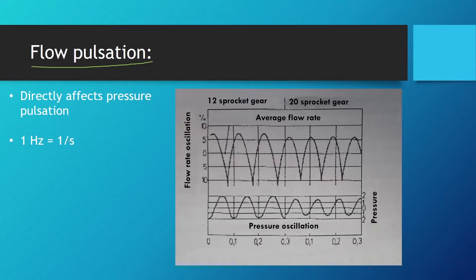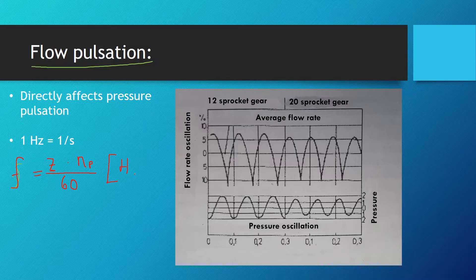How do we calculate flow pulsation? First, let's calculate the frequency of the pulsations. The frequency f equals z, the number of teeth, times the speed in rotations per minute, divided by 60. This gives frequency in hertz. One hertz means it happens once per second; 60 hertz means 60 times per second. One hertz is essentially one divided by second, or second to the minus one. The pulsation of flow impacts pressure and makes noise while the pump works.